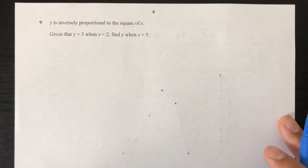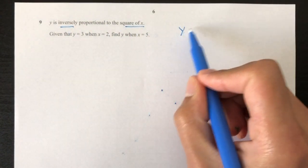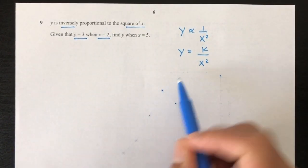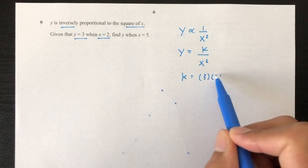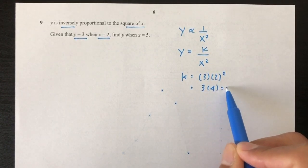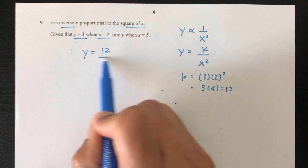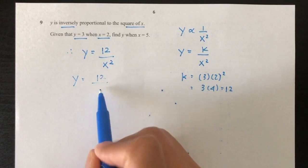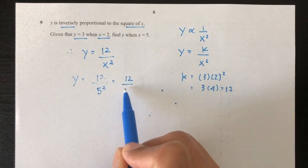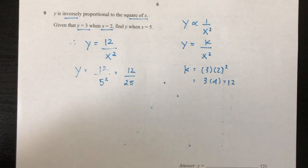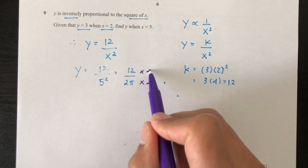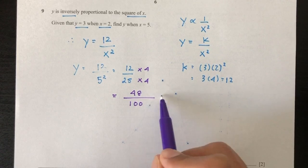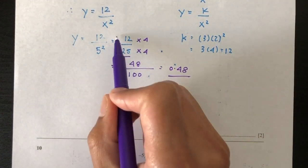Now let's move on to question number 9. Y is inversely proportional to the square of x, which can be written as y equals k over x squared. Given that y equals 3 when x equals 2, we solve: k equals 3 times 2 squared, which is 3 times 4, giving k equals 12. So the equation is y equals 12 over x squared. Using that equation, when x equals 5, y equals 12 over 25. You can simplify to 0.48 by multiplying numerator and denominator by 4 to get 48 over 100. Your answer can be 12 over 25 or 0.48.